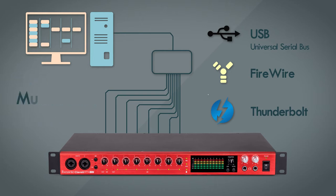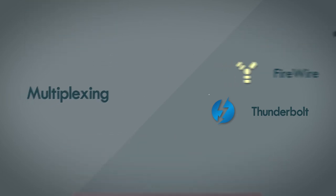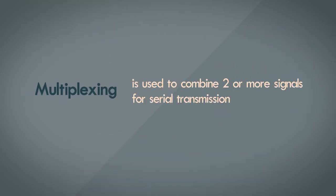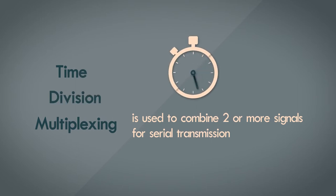We make use of multiplexing. A multiplexer is a component used to combine two or more signals for serial transmission. Several multiplexing techniques are around, but for digital signals, time division multiplexing is the predominant one.